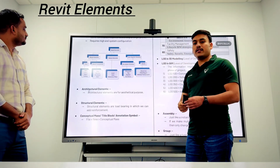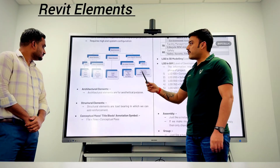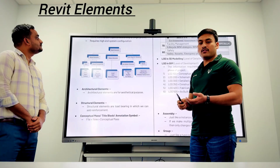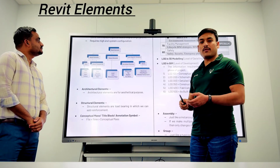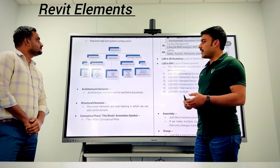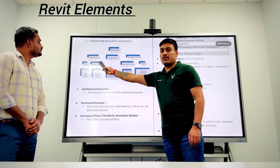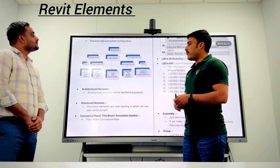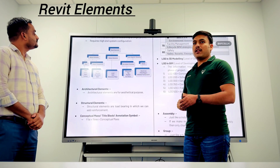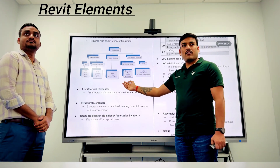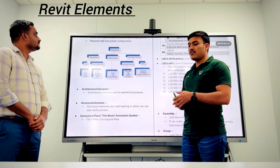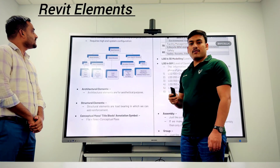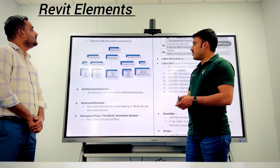The basic model elements in Revit include windows, plumbing, water supply, electrical, cable, and other basic model elements. There are also data elements and annotation elements.